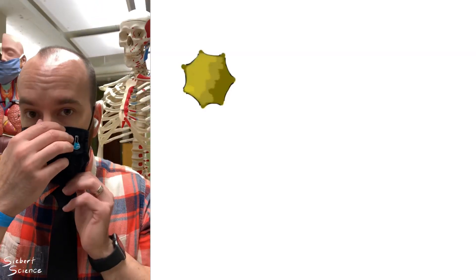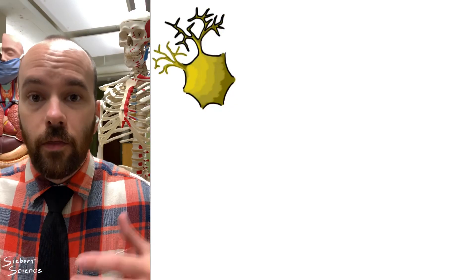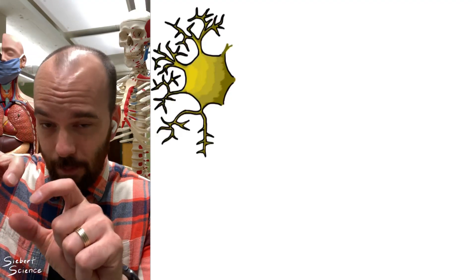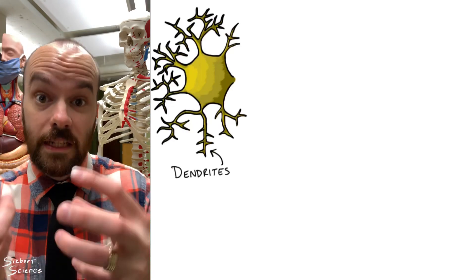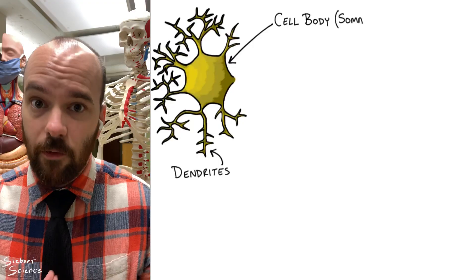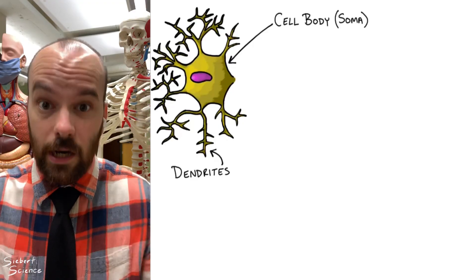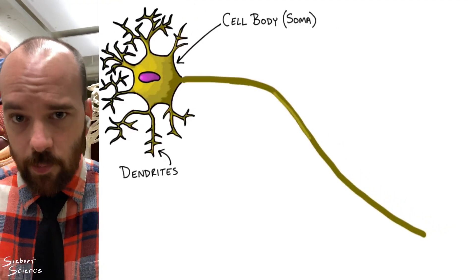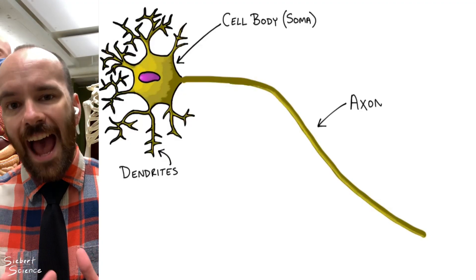Let's head to the whiteboard. The neuron has a cell body just like any other cell, and out of that cell body are appendages we call dendrites. The dendrites are a receiving appendage — they take in information from thousands of other neurons in your brain, spinal cord, or cranial nerves, all taking information up into your brain to be processed.